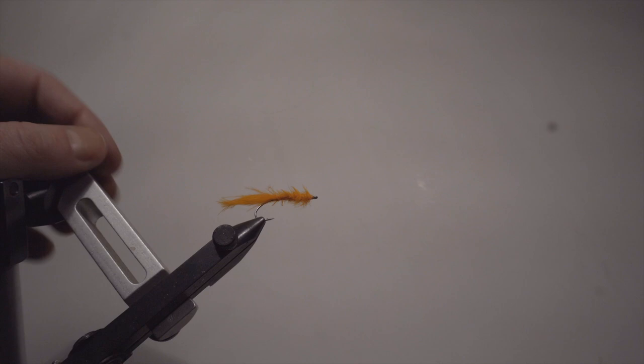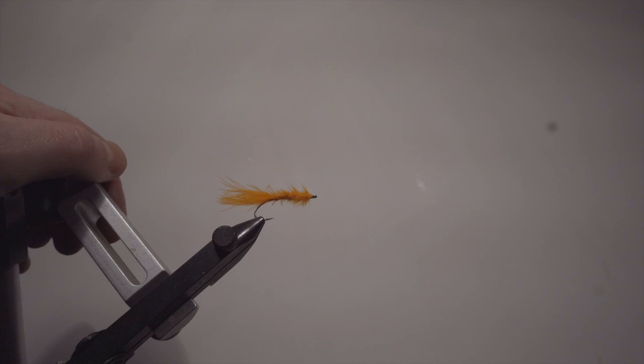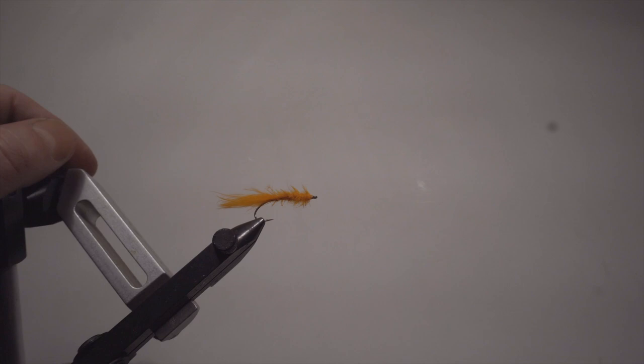Even when I'm fishing nighttime in the summers, if the worm is orange, you should still fish an orange fly. Even though it's black outside and the contrast in a black fly is stronger, if the natural that you're imitating is orange, it doesn't change to black because it's dark outside.